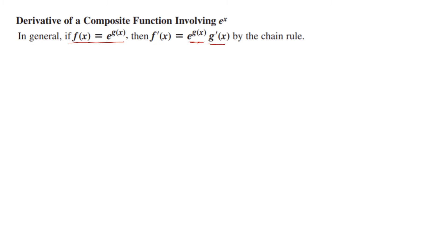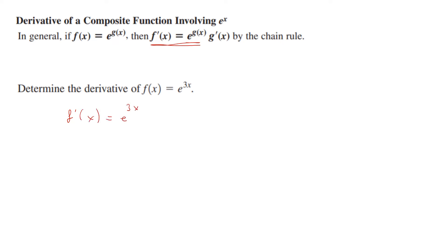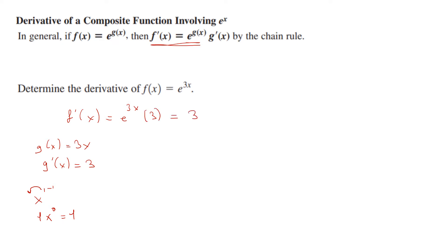Here is an example. To find the derivative of e to the power of 3x, I keep e to the power of 3x the same. Because my g(x) is 3x, I take the derivative of that, which gives me 3 — since 3x is 3 times x to the power of 1, and applying the power rule gives just the constant 3. So the answer is 3e to the power of 3x.